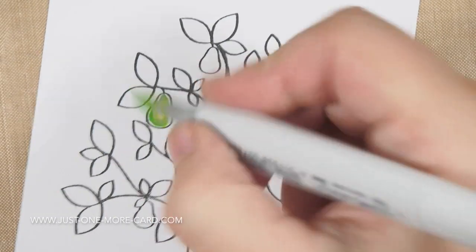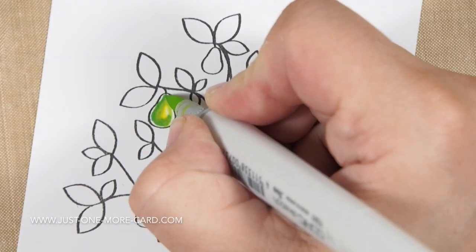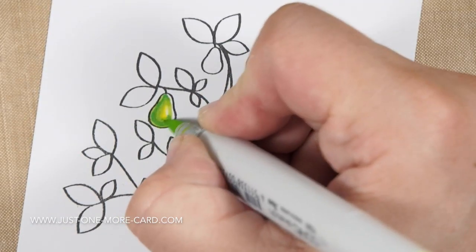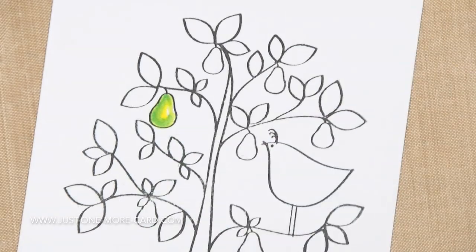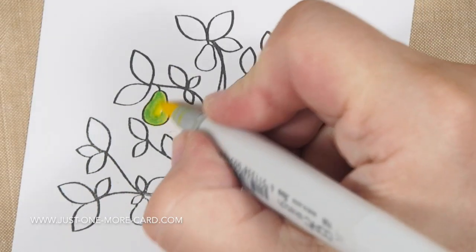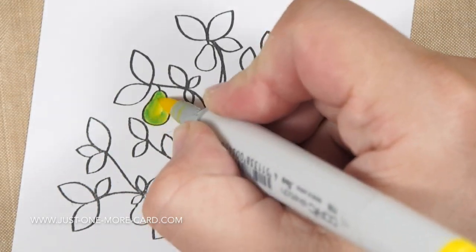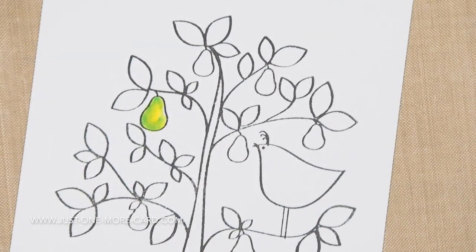It changes how the dark green looks. That's usually what happens when you go over a darker color with a lighter color when you use Copic markers. Then I'm going to come back with my yellow here and make sure that I have a proper nice yellow highlight.